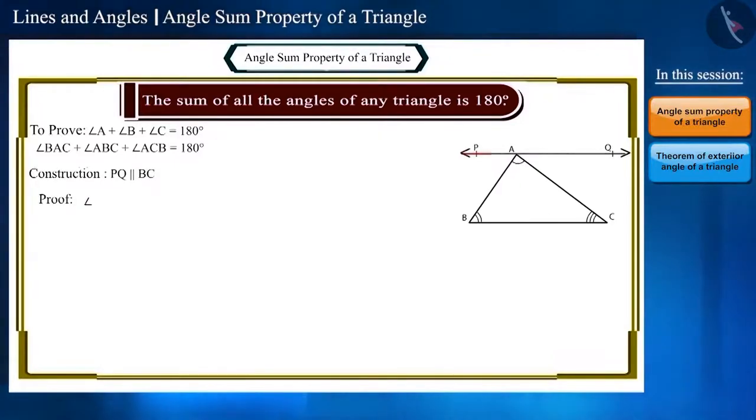Friends, what will be the value of angle PAB plus angle BAC plus angle QAC? The sum of these three angles will be 180 degrees because they are angles formed on a straight line. Let us call it equation 1.